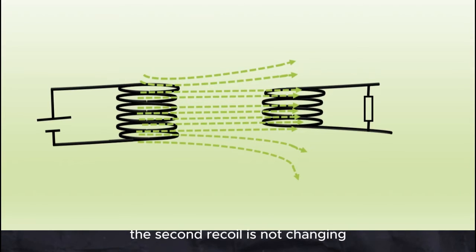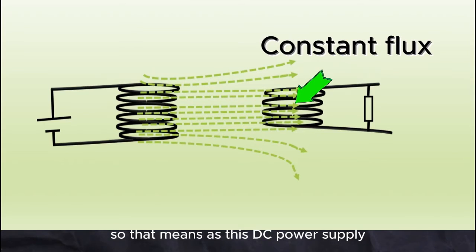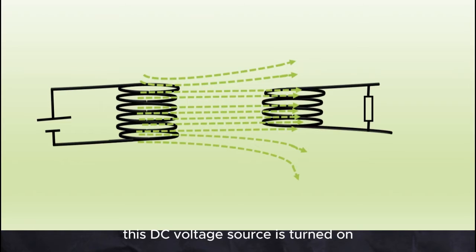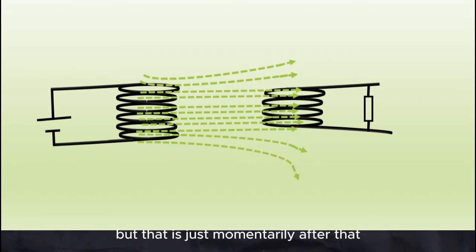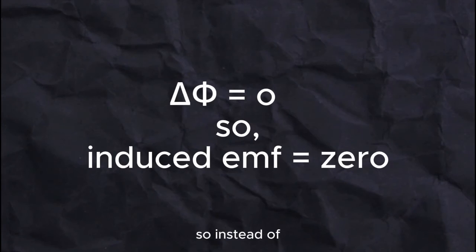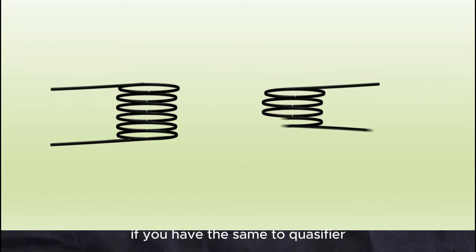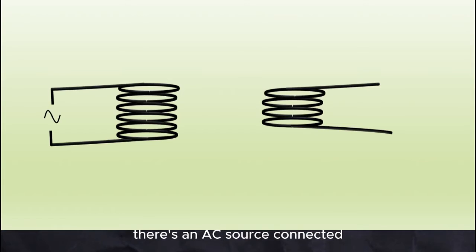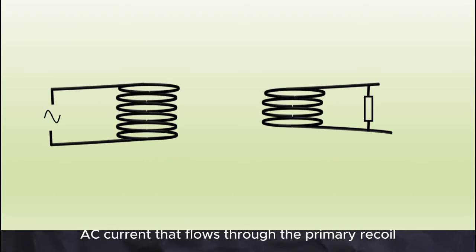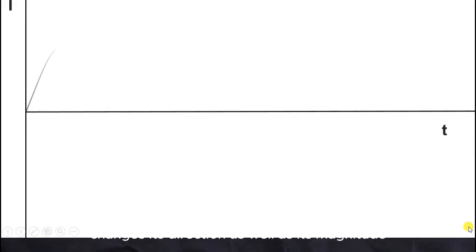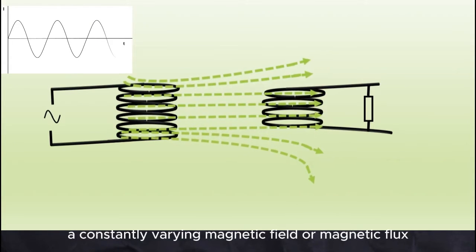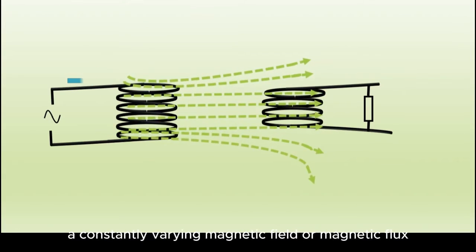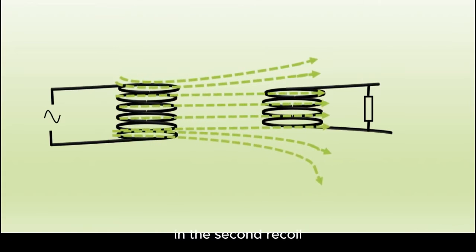So the flux passing through the secondary coil is not changing. When the DC power supply is turned on there is a change of flux through the secondary coil and that induces an EMF, but only momentarily — after that, since the flux does not change, no EMF is induced. Instead, if you use an AC source, there would be an AC current flowing through the primary coil that changes its direction as well as its magnitude, producing a constantly varying magnetic flux through the secondary coil.